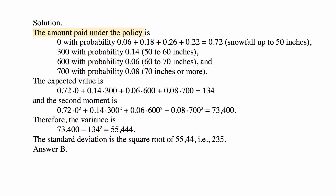The expected value: we have four possible values and their probabilities, so we multiply each probability times the amount and add it up. That's 0 times 0.72, plus 0.14 times 300, plus 0.06 times 600, plus 0.08 times 700, which equals 134.